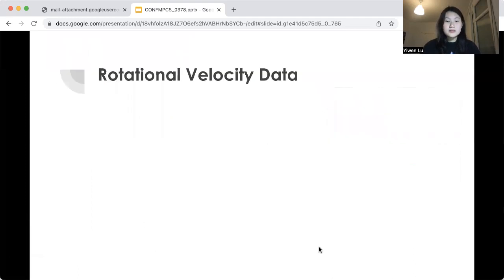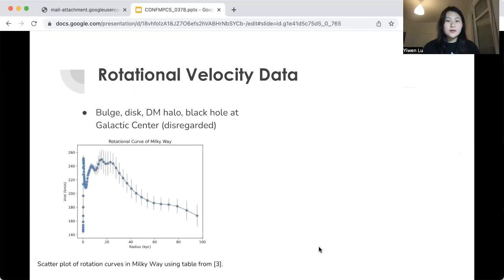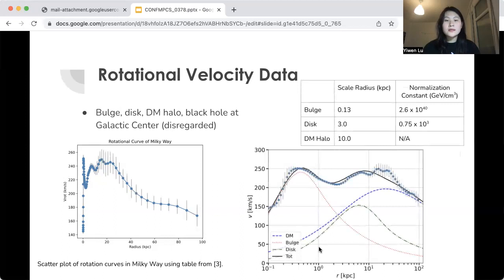Next, we use rotational velocity data from three components of the galaxy: the bulge, the disk, and the dark matter halo. There's also a fourth component, which is the black hole at the galactic center. But because it has little effect beyond the immediate vicinity of the galactic center, we disregarded it. And here is the scatter plot of our data with the gray lines being standard deviation. Using mathematical equations for each of the components, we manually altered the parameters to best fit the given scatter plot. And these are our resulting scale radii and normalization constant values for each component and the compiled graph.